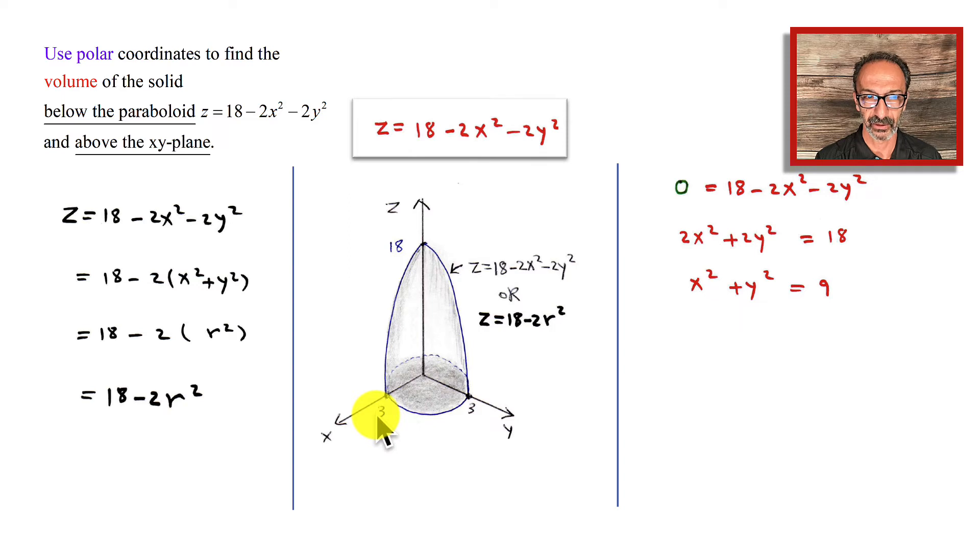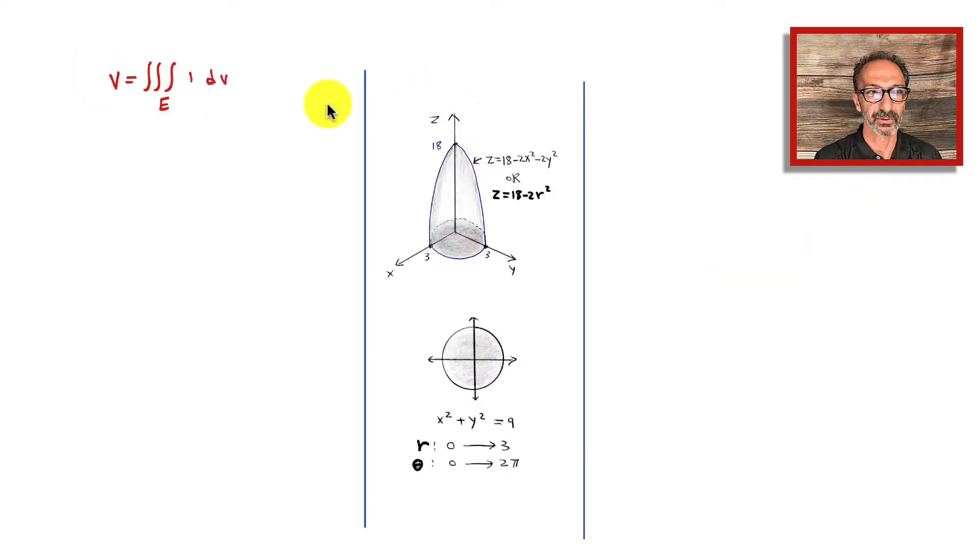That means r squared, so r is 3. You can see the graph intersects the y-axis at 3 and the x-axis at 3. That's the region. Looking in two dimensions at the region D down below, we have the xy-plane x squared plus y squared equals 9. So r goes, because it's a solid region, from 0 to 3, and theta goes all the way from 0 to 2π. The volume with triple integration is going to be 1 inside. We have the volume equals the integral of 1 dV over the region E that we are looking at.